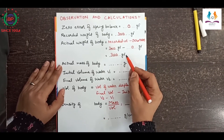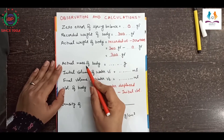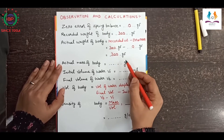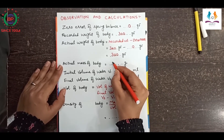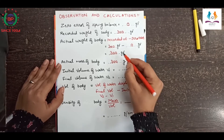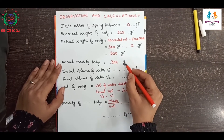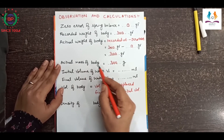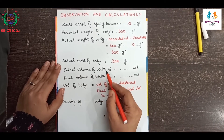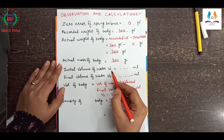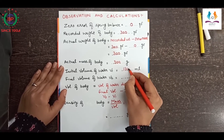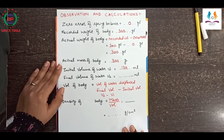The actual mass of the body — the weight is 300 gram force. If we want to write its mass in grams, the numerical value is the same; only the unit changes from gram force to grams. So the actual mass of the body is 300 grams. The initial volume of the water is denoted by V1 and we have taken it as 130 ml.